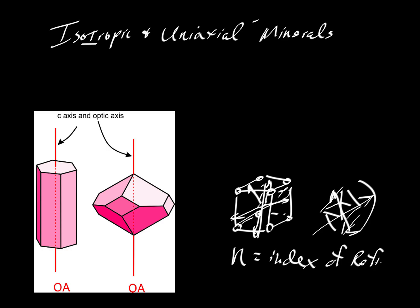So the index of refraction for these minerals is the only optical property that they have. This is in contrast with the next group that we'll look at, the so-called uniaxial minerals.